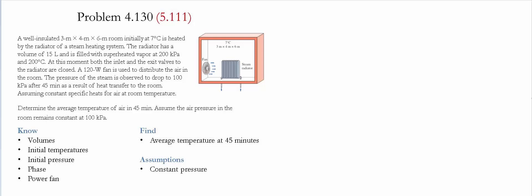In this problem, a well-insulated 3 meter by 4 meter by 6 meter room, initially at 7°C, is heated by a radiator of a steam heating system. The radiator has a volume of 15 liters and is filled with superheated vapor at 200 kilopascals and 200°C. At this moment, both the inlet and exit valves of the radiator are closed. A 120 watt fan is used to distribute the air in the room. The pressure of the steam is observed to drop to 100 kilopascals after 25 minutes as a result of the heat transferred to the room.